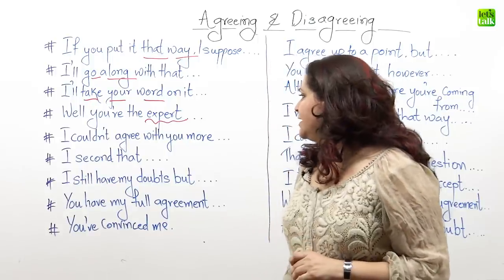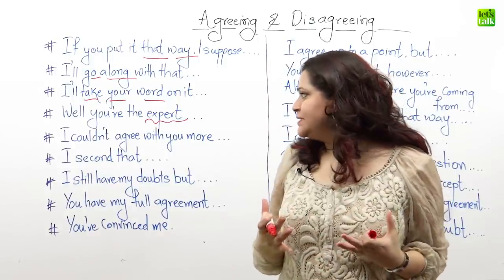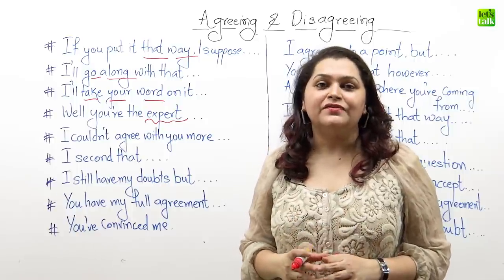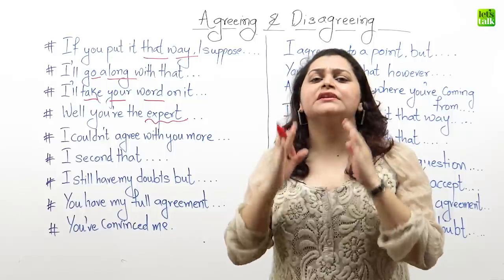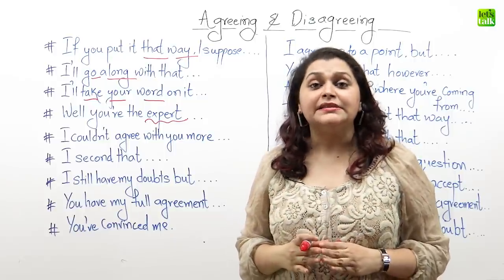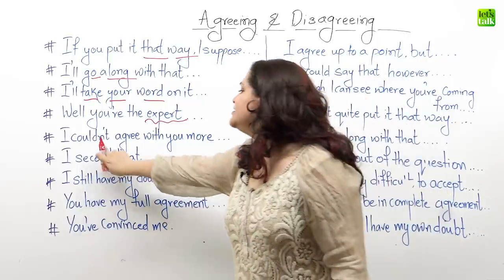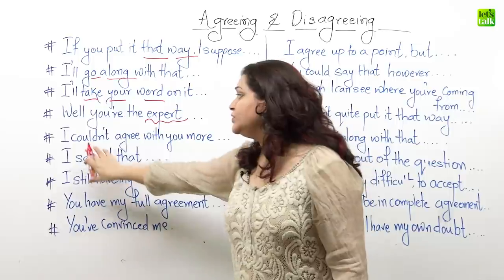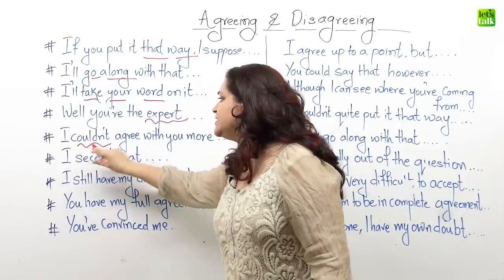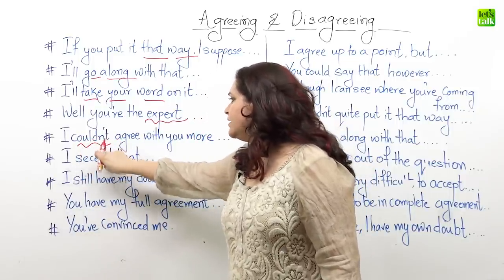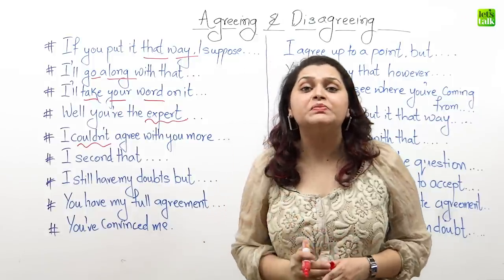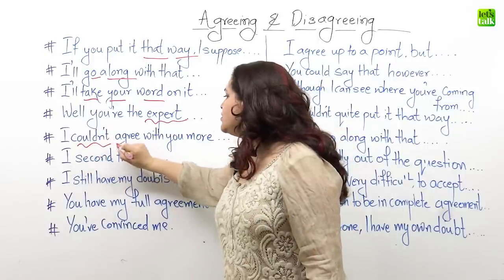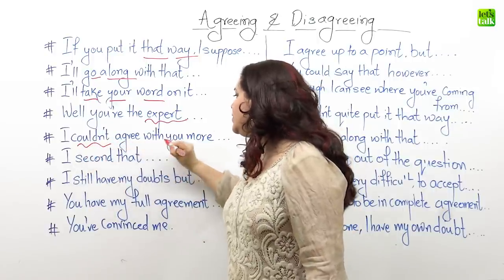Moving on, imagine there are times when Sally and Dan completely agree with each other — they are in total, complete agreement. In such cases, Sally can say 'I couldn't agree with you more.' Now although this sentence is negative because we are using 'couldn't' or 'could not,' it actually means that Sally completely agrees with Dan. So it says, 'I could not or I couldn't agree with you more.'